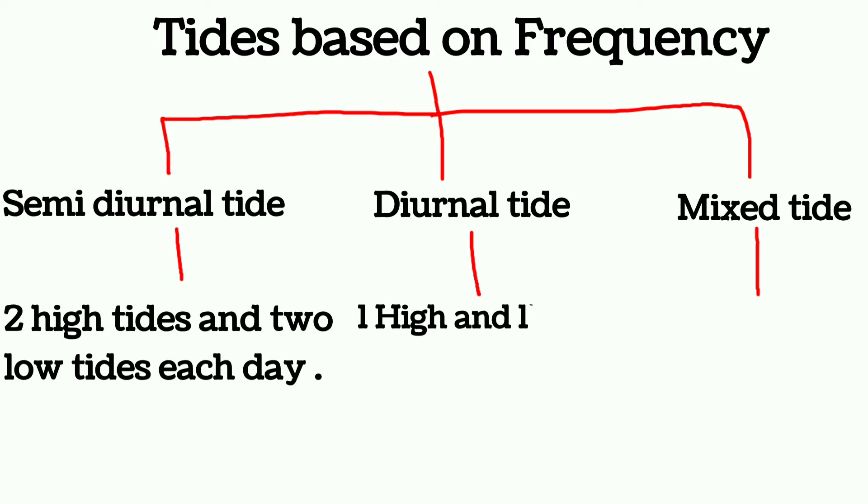In mixed tides, the tide having variation in height mostly occurs in the west coast of North America and the islands of Pacific Ocean.